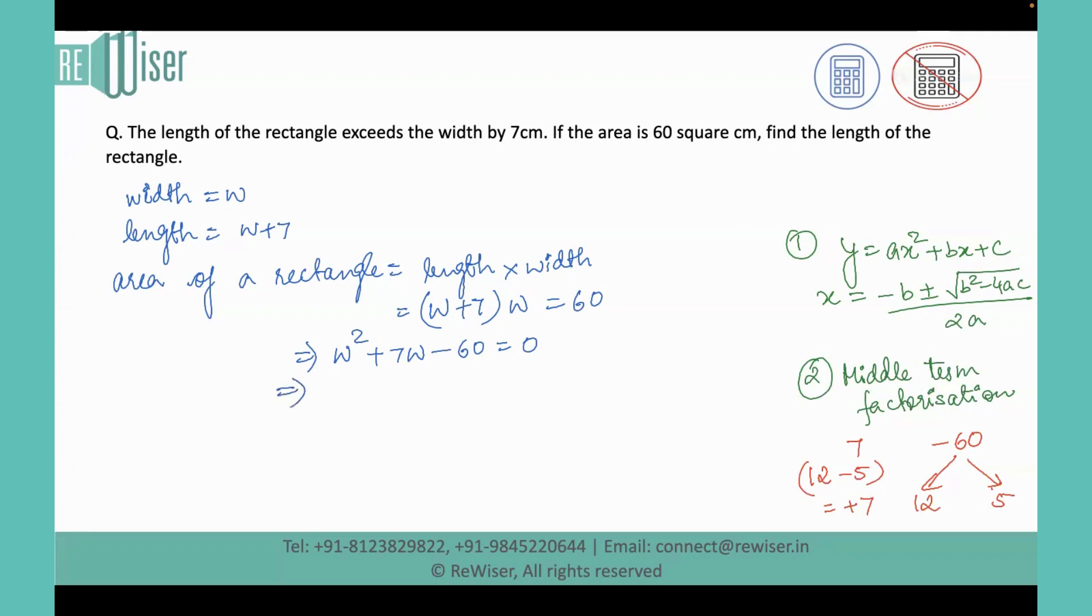Now we'll apply the same in the given quadratic. The quadratic can be written as W square plus 12W minus 5W minus 60 equals 0. Now we can take W common from the first two terms and we'll get W plus 12. In the next two terms, minus 5 can be taken common and we would again get W plus 12.